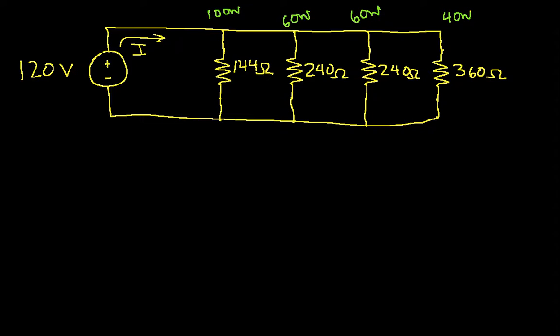A practical application of that is if you put too many light bulbs on one circuit, you'll trip a breaker, which means that you won't be able to turn on all your lights at once. So I'll denote the current coming out of the source as I, and I'll denote the current going through the 100 watt bulb as I1, the current going through the first 60 watt bulb as I2, current going through the second 60 watt bulb as I3, and the current going through the 40 watt bulb is I4.